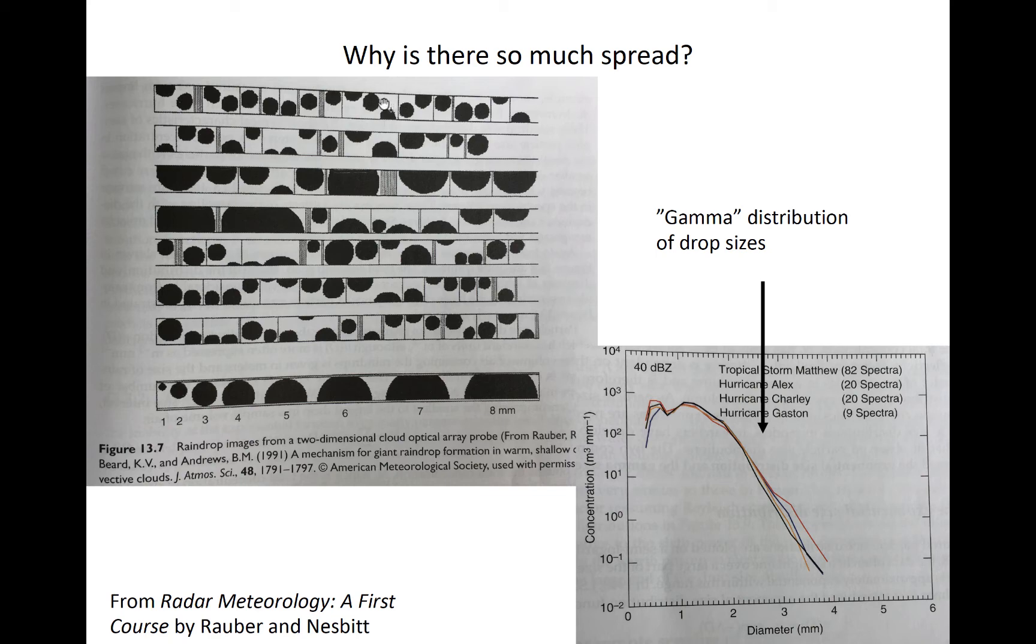The top left figure shows outlines of raindrops captured by an aircraft-based cloud drop probe. As you can see, a wide variety of drop sizes can occur depending on the kinematics found within a cloud. But even within the same part of a cloud, a variety of drop and droplet sizes are present.